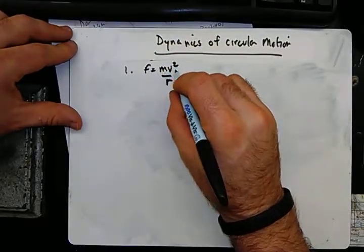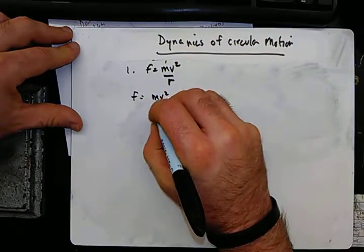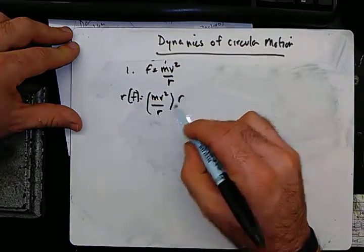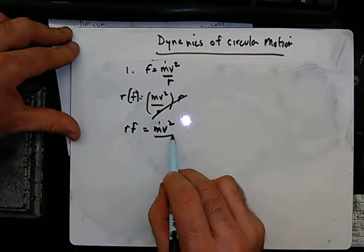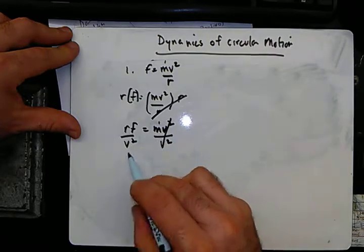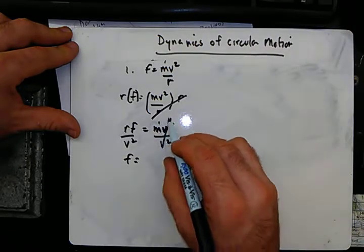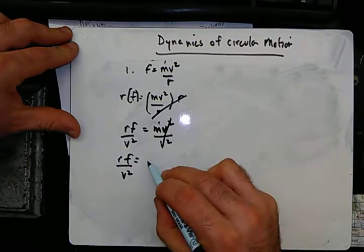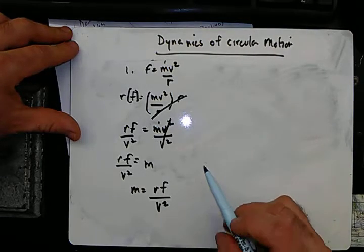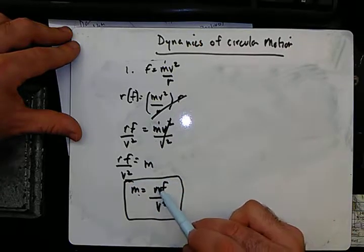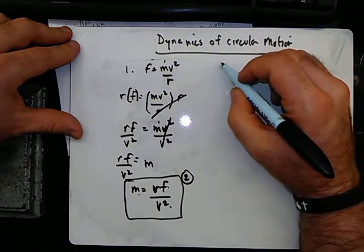Let's solve F = mv²/r for different variables. Solving for mass: multiply both sides — radius times force equals mv². Divide both sides by v²: m = Fr/v². So mass equals the radius times the force over velocity squared. That's the second rendition of the formula.